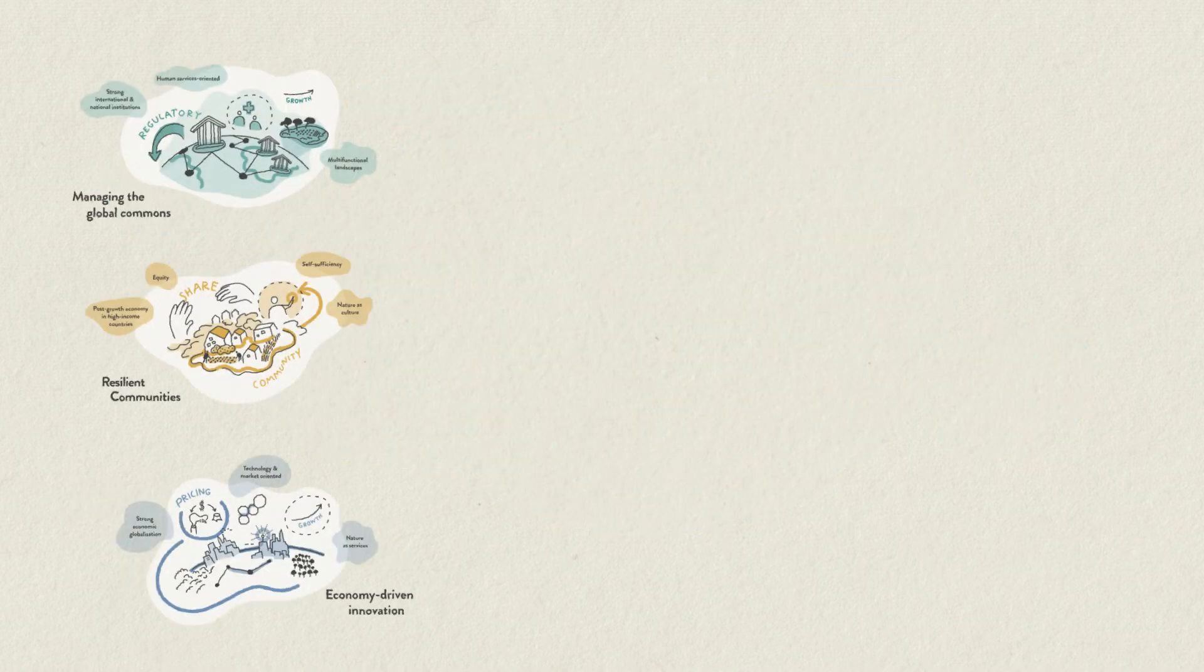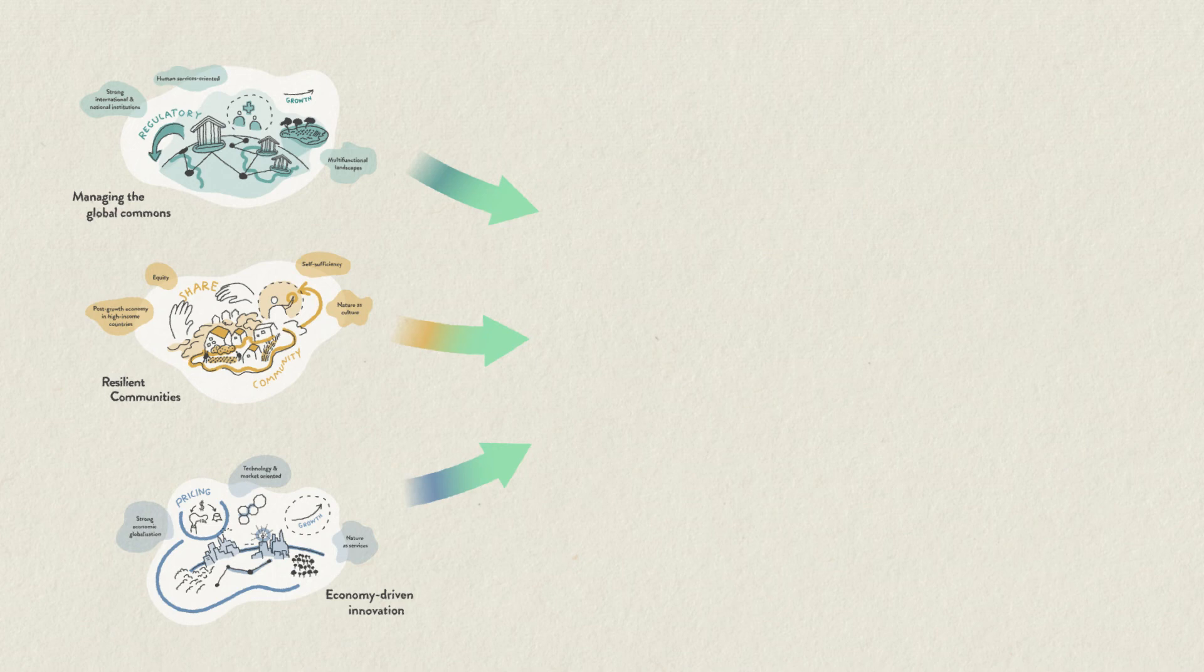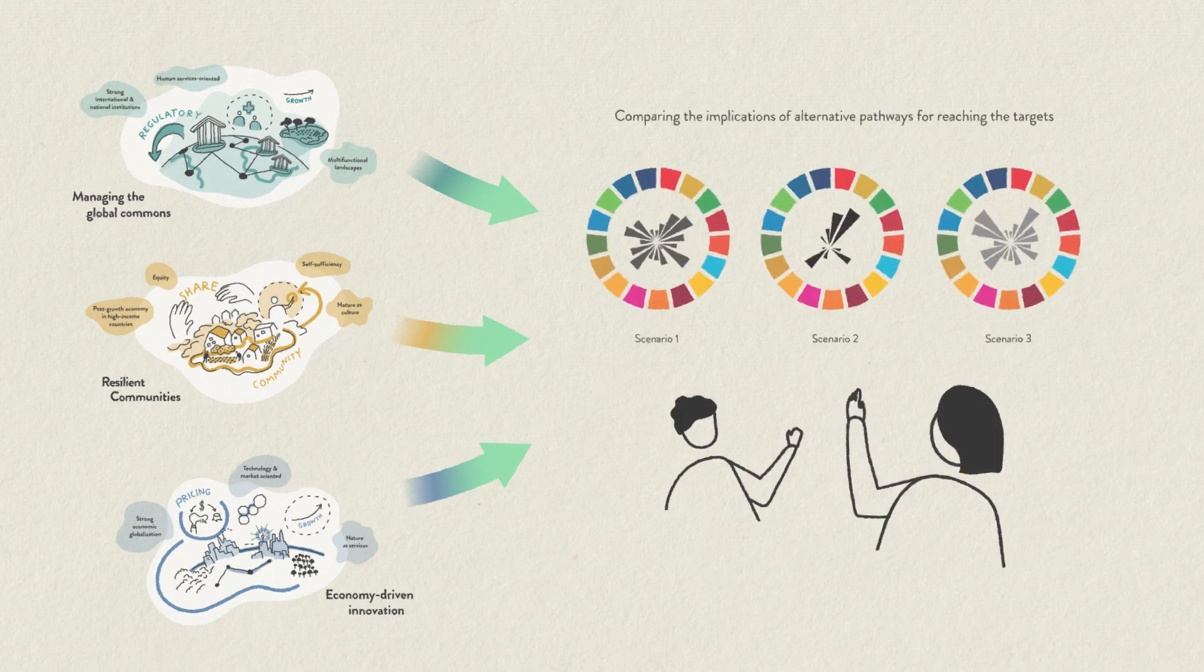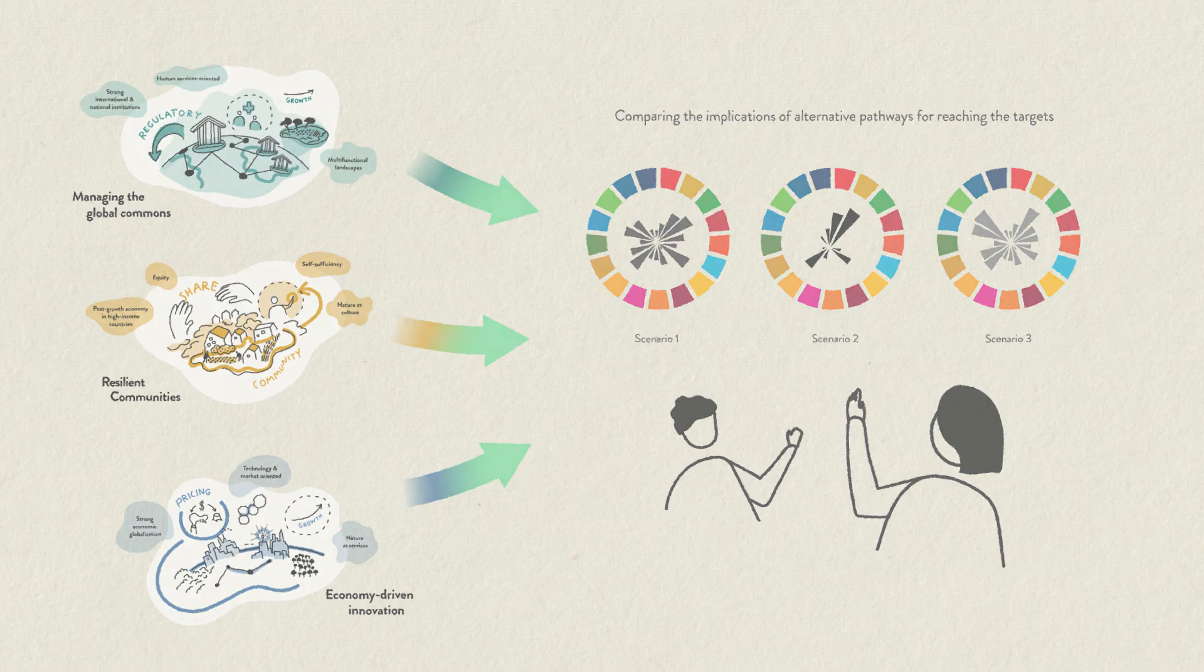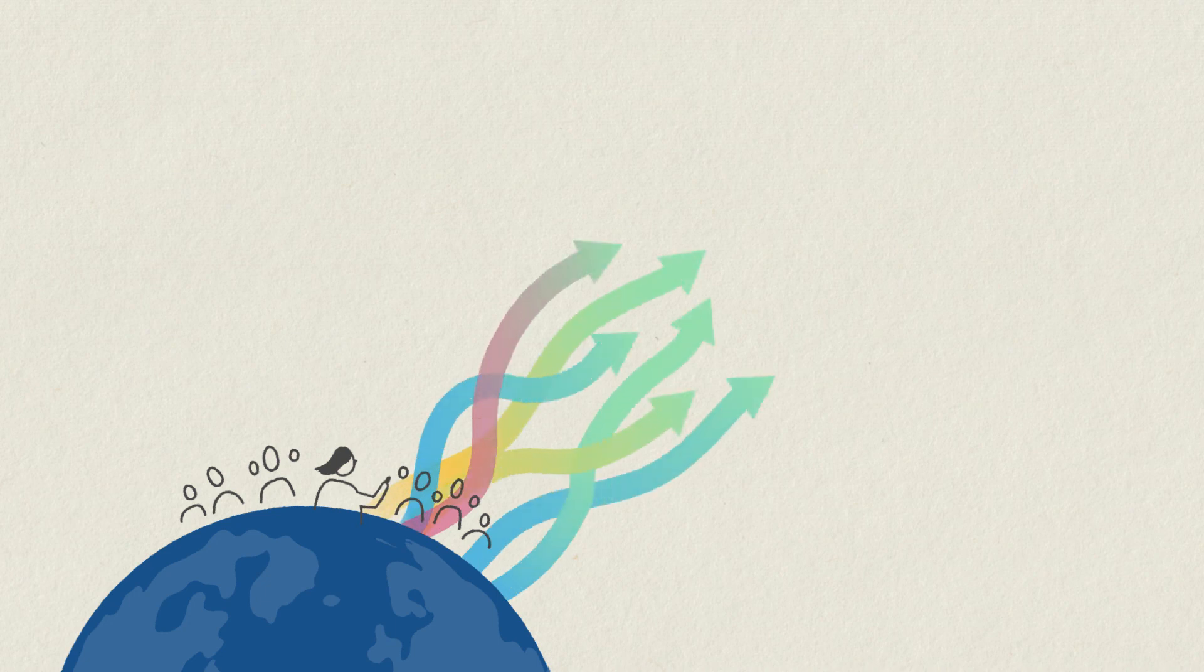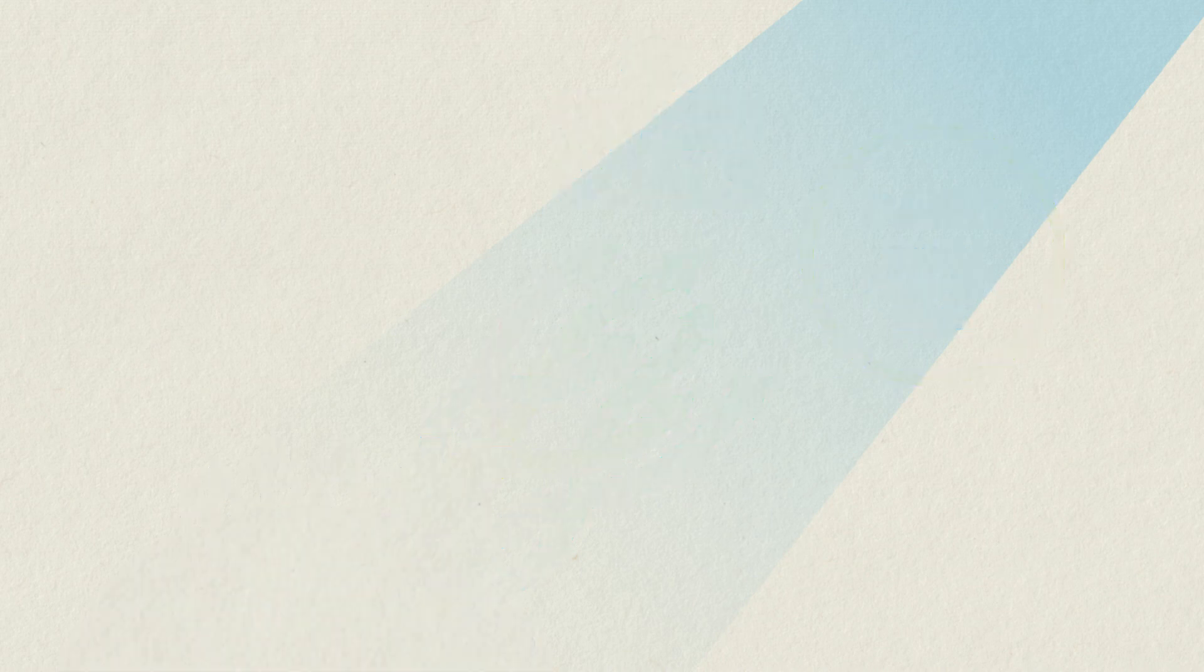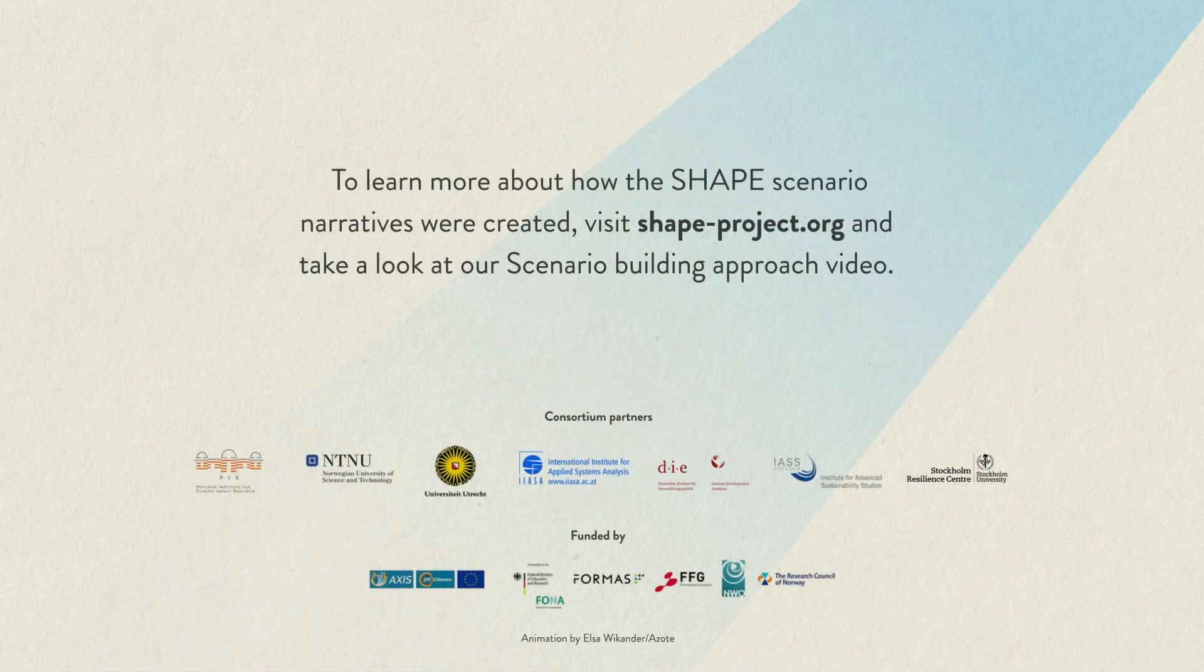These scenarios developed by SHAPE serve both as a starting point for other modelers and analysts to explore other combinations and pathways, whilst working as guides for practitioners and policymakers towards how to achieve the SDGs and Paris Climate targets. Together, we create a better shared understanding of possible pathways to reach a positive future.